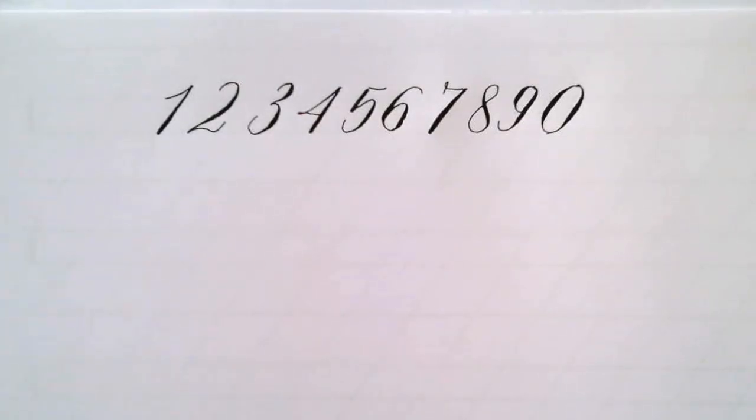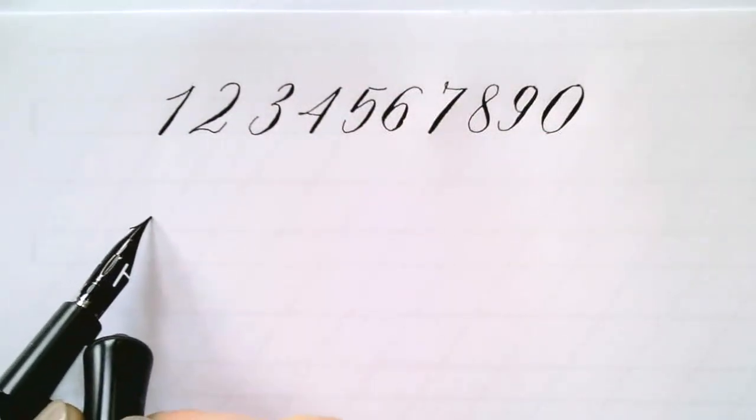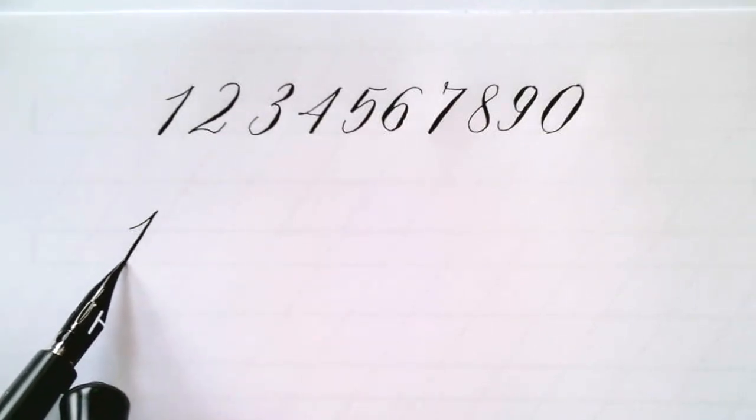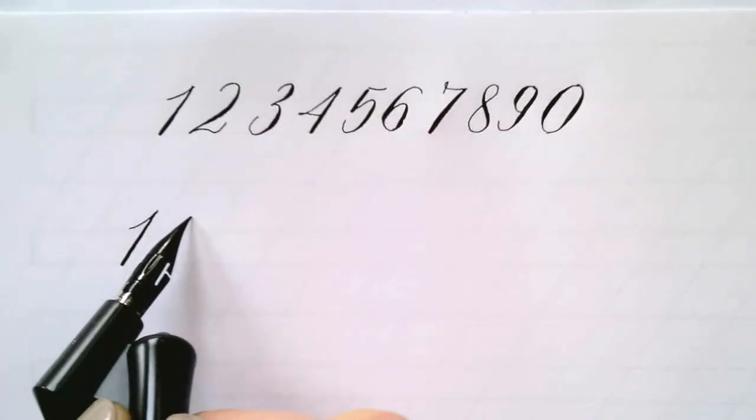All right, and we're looking at the numbers. We're going to be writing in the modern style. All numbers will be the same size, starting at the waistline, going about a third into the ascender space. The one has a slight in-stroke and a dynamic stem, increasing pressure towards the baseline and making sure to square off.